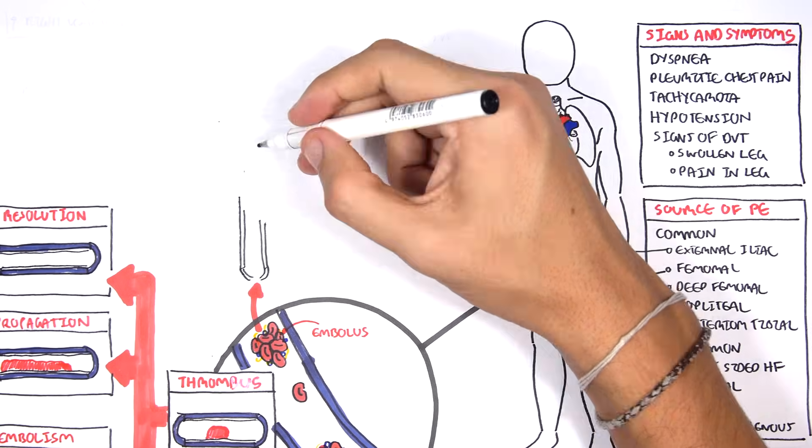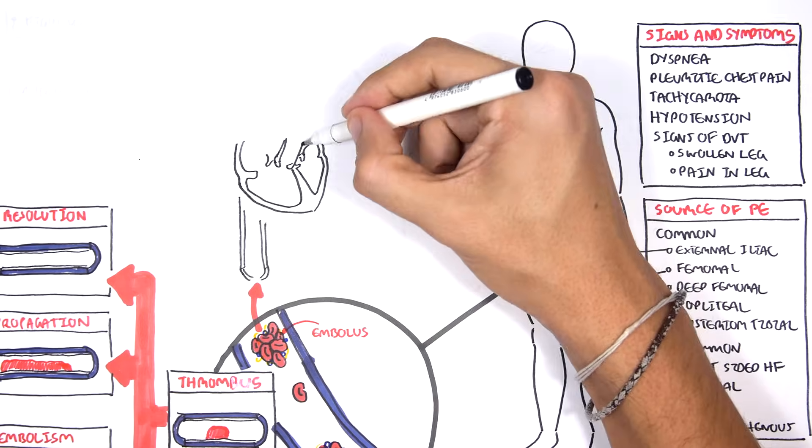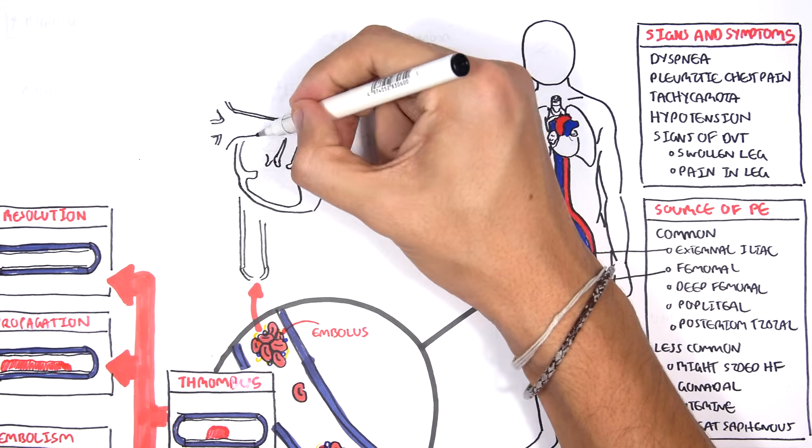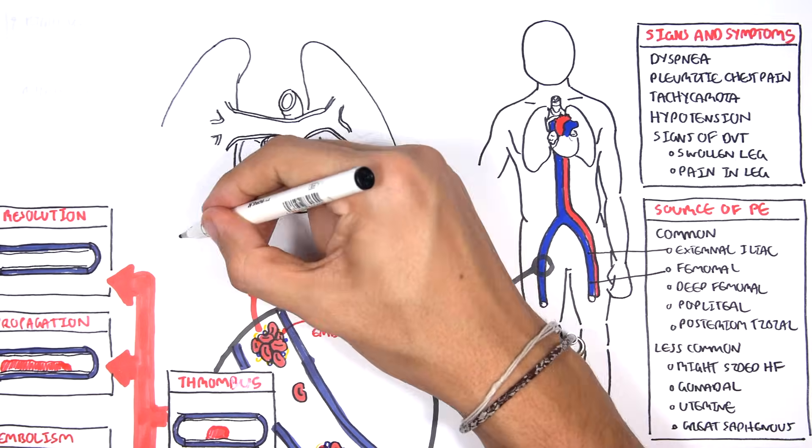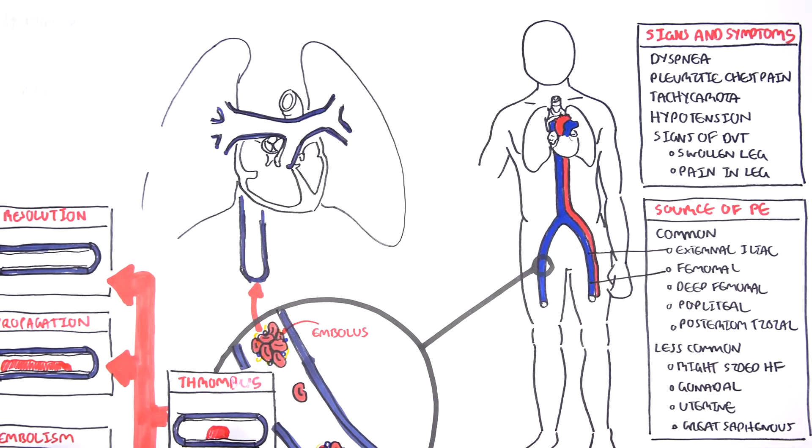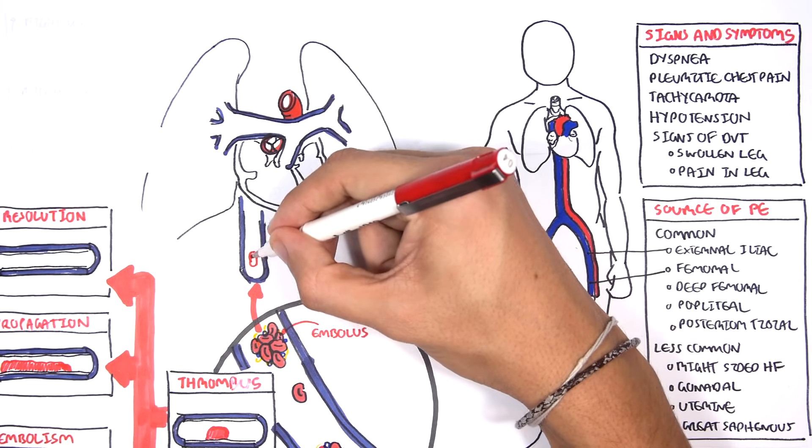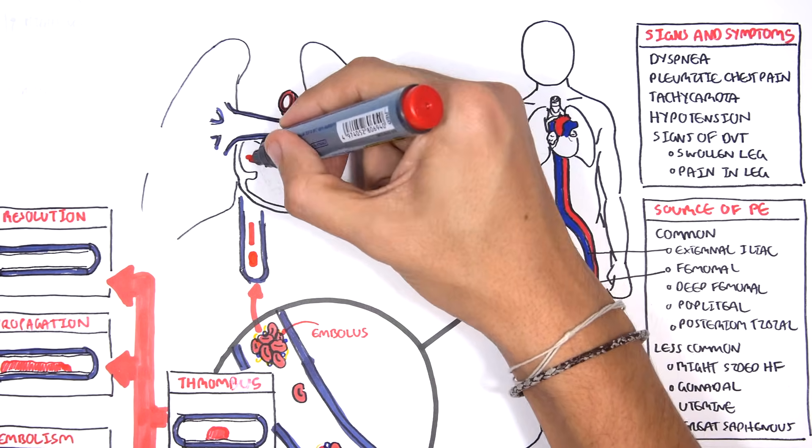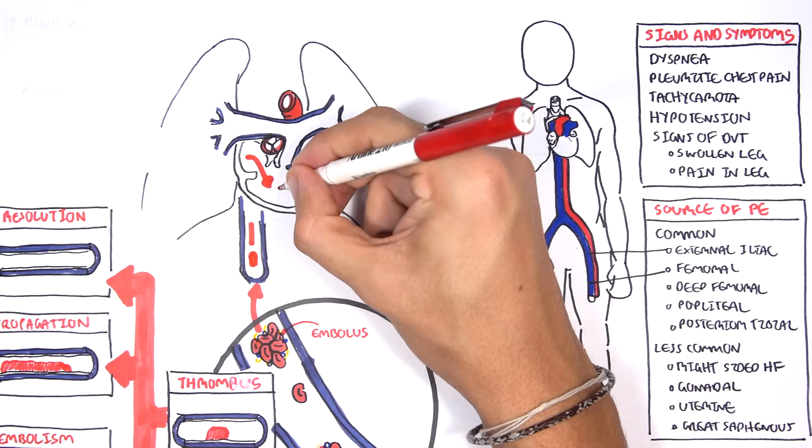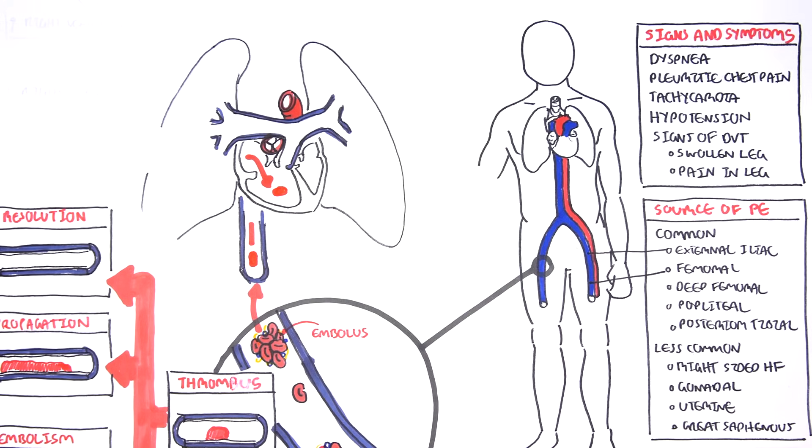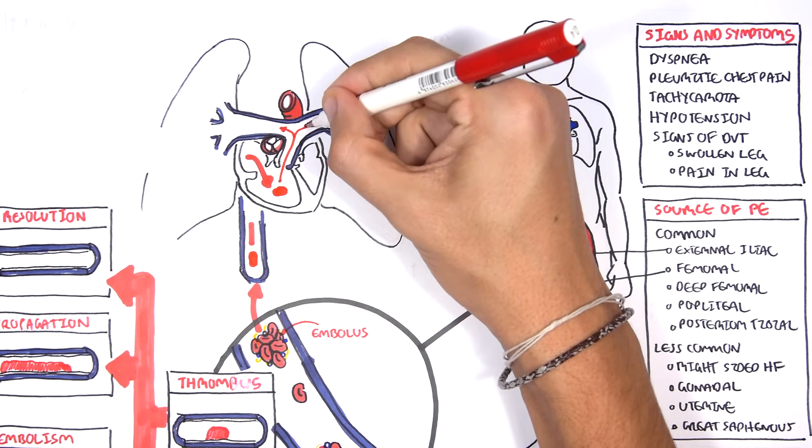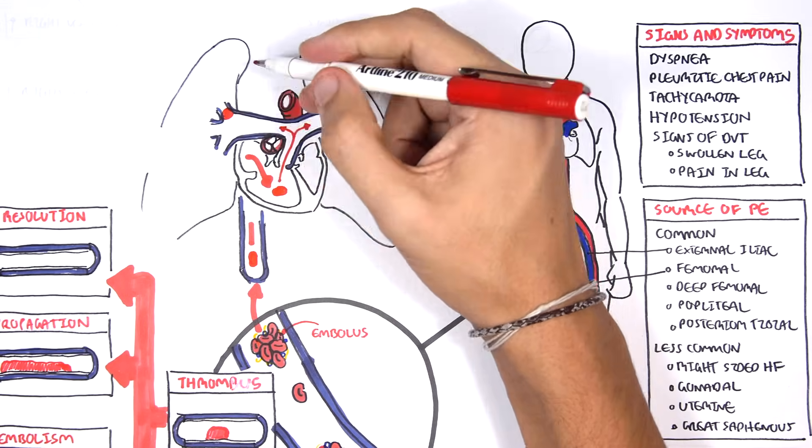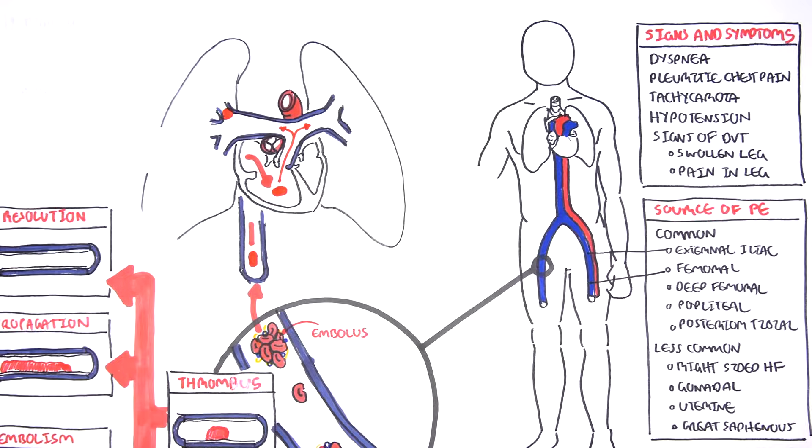In this diagram here, you can see an embolus, which broke off, and it will travel up to the inferior vena cava and then up towards the heart. So here I'm drawing the heart and the lungs. The emboli travels up, it goes into the right atrium, then goes down to the right ventricle, and then it goes up the pulmonary trunk, and it can go either way to the pulmonary arteries. Let's just say it lodges here. So this is a pulmonary emboli. It has lodged into one of the smaller branches of the pulmonary artery.